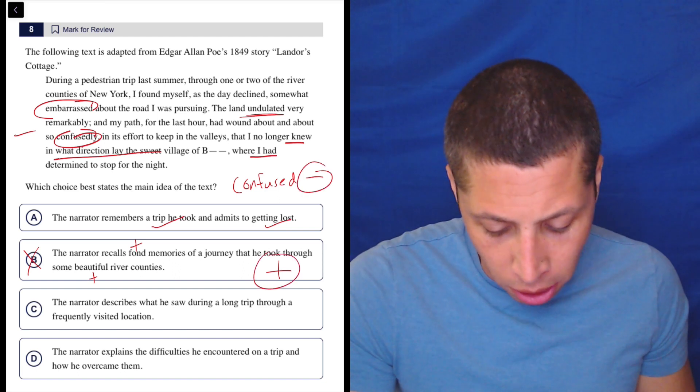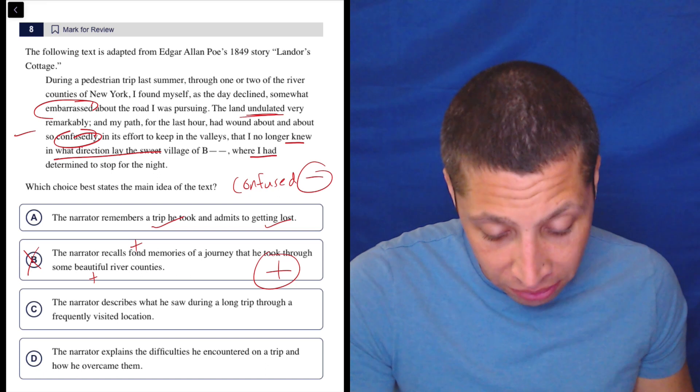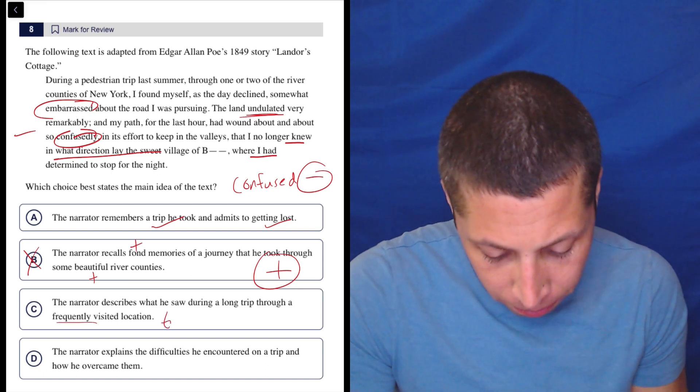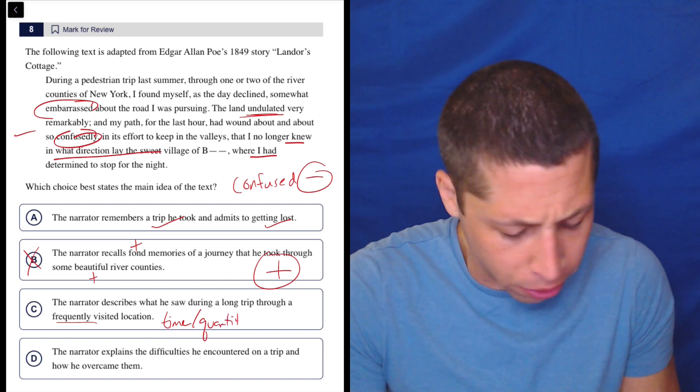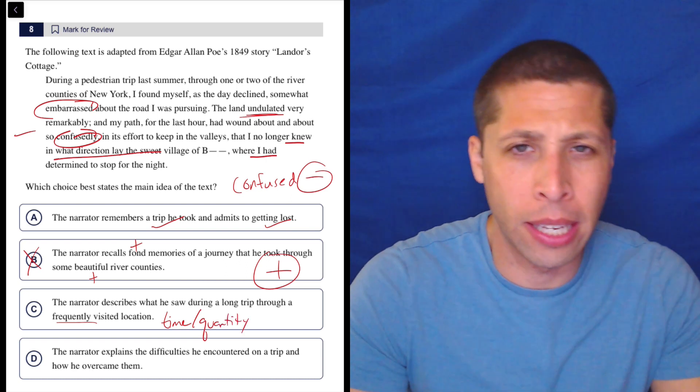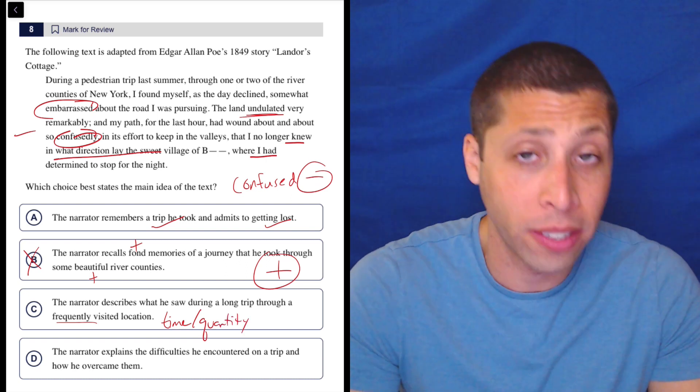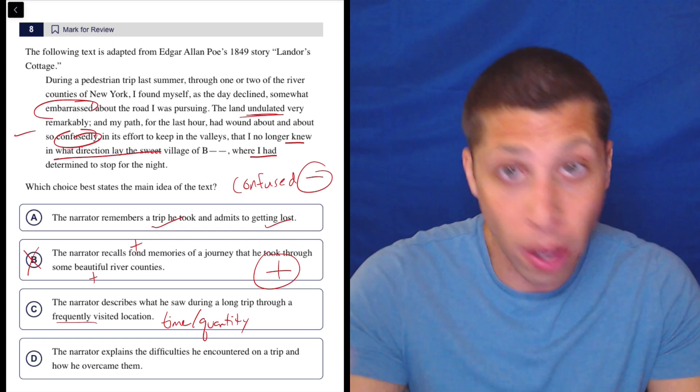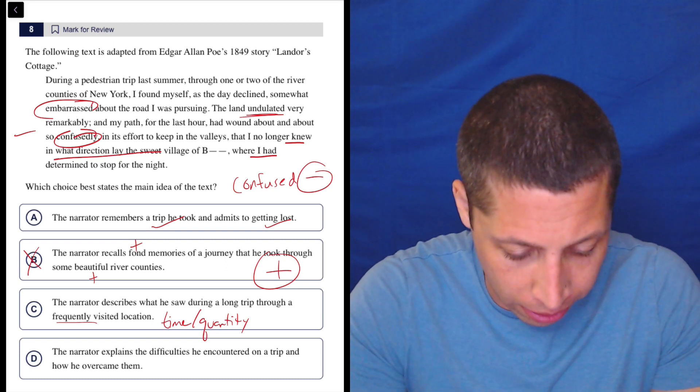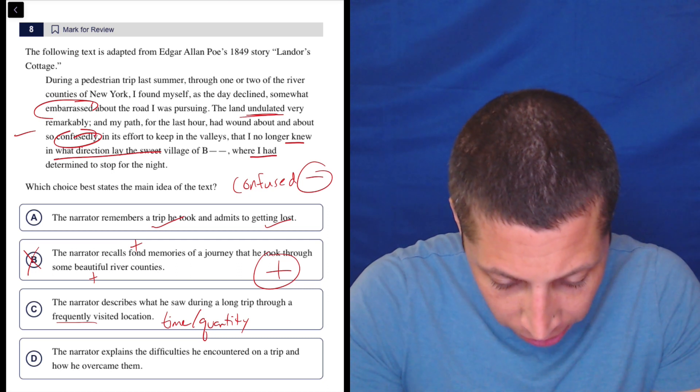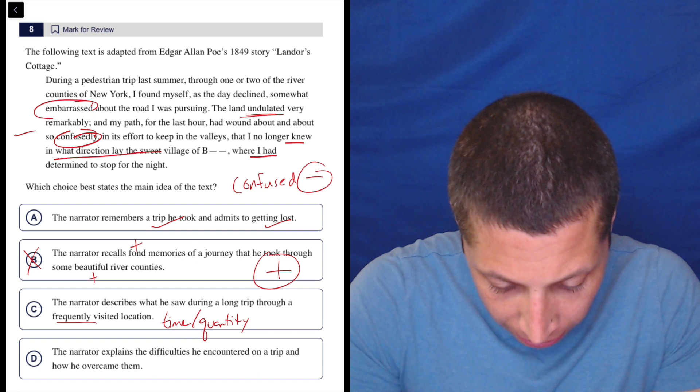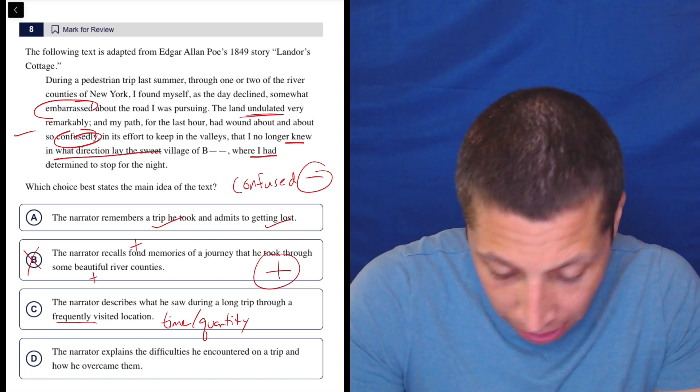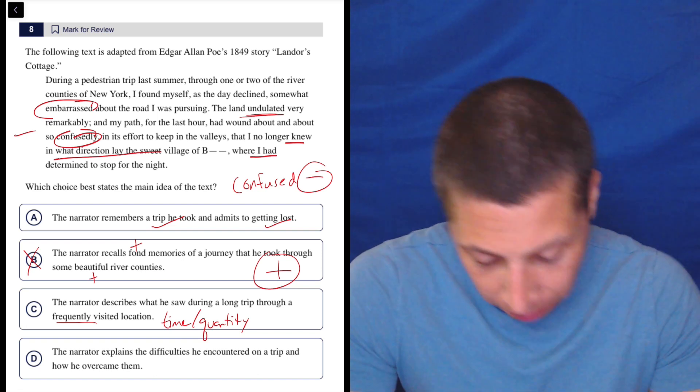C: The narrator describes what he saw during a long trip through a frequently visited location. Well, time, right? We're bringing in the idea of time, or even another type of choice that bothers me in reading passages is quantity words. Frequently is a quantity word, it's also a time word. So is this something he's done a lot? He was there last summer, he was lost.